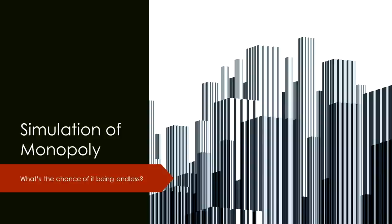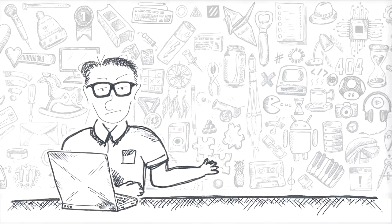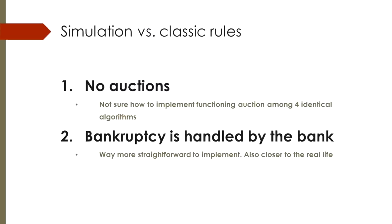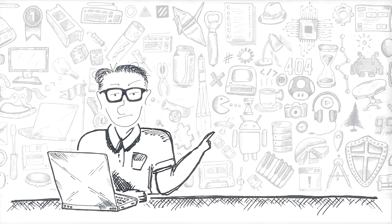While implementing the simulator, I did cut a couple of corners of classic Monopoly rules. To put it simple, first, there are no auctions, and second, bankrupt player returns the property to the bank. That's it. The rest is standard Monopoly rules.